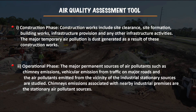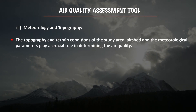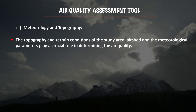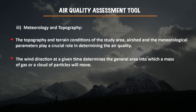During the operational phase, the major permanent source of air pollutants is chimney emissions and vehicular emissions from traffic on major roads, as well as emissions from nearby industries and stationary air pollutant sources. Meteorology and topography also play a crucial role. The topography and terrain conditions of the study area, airshed, and meteorological parameters determine air quality. Wind direction determines the general area in which a mass of gas or cloud of particles will move, while wind speed determines how rapidly the contaminant will advance.